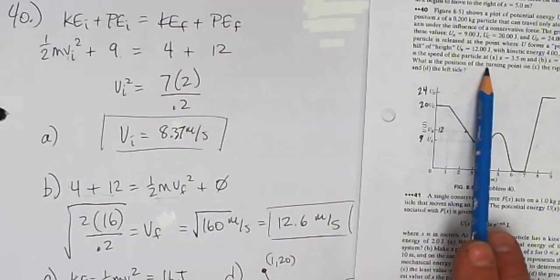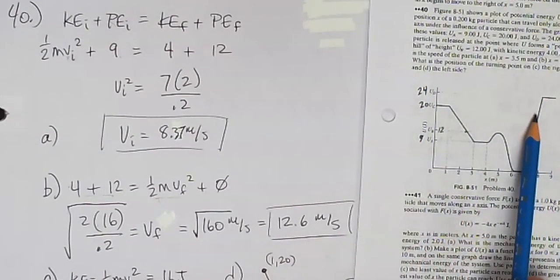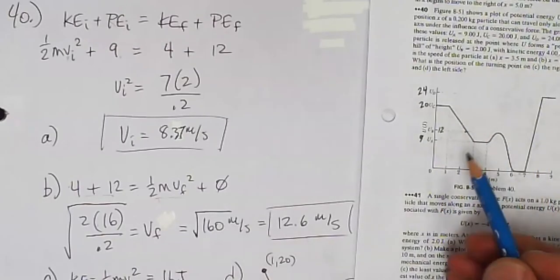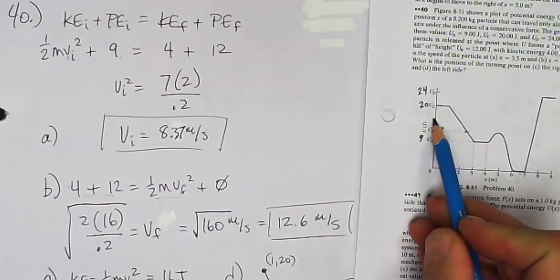What is the position of the turning point on the right side over here and on the left side over here? So I know if I draw a line at 16 joules, those are the points I'm looking for.